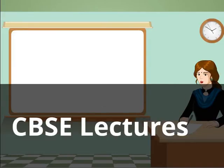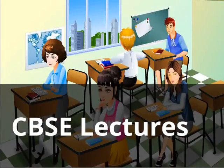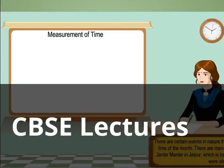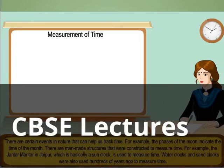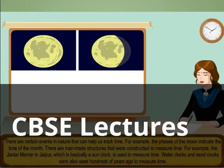Do you know how measurement of time is done? There are certain events in nature that can help us track time. For example, the phases of the moon indicate the time of the month.